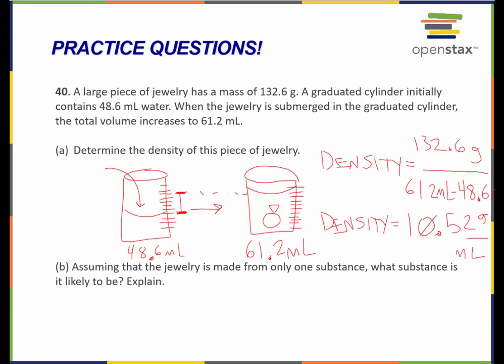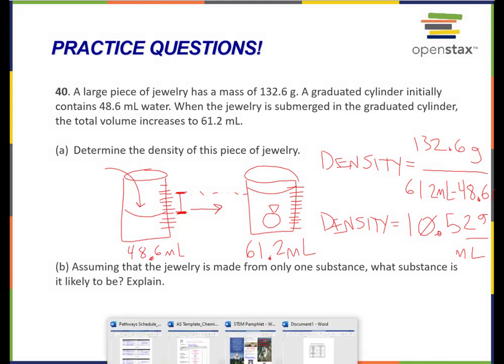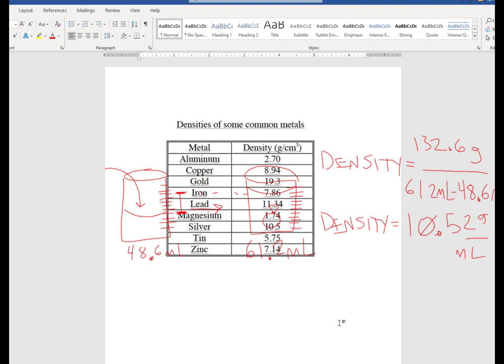Part B says, assuming the jewelry is made from only one substance, what substance is it likely to be? Density is a property that's unique to a substance, generally. If I pull up this table of densities here, our density is 10.52 grams, and according to my table, 10.5 grams is silver.